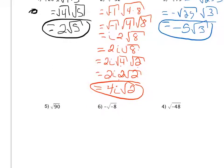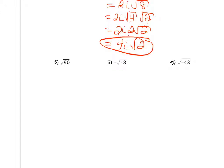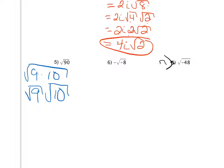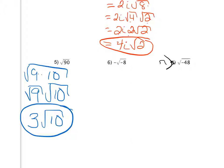Looking at example 5, I have the square root of 90. I don't care if it can be divided by things that are not perfect squares — I'm only going to consider perfect squares. Looking at my list, I realize 90 is divisible by 9, so the square root of 90 is the same as the square root of 9 times 10, which reduces to the square root of 9 times the square root of 10. The square root of 9 is just 3. I do not know the square root of 10, it has no other perfect square factors, and there's no negative under the radical, so I stop there.